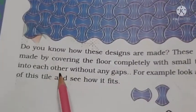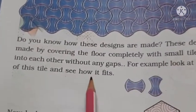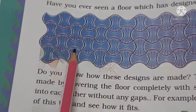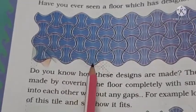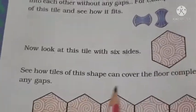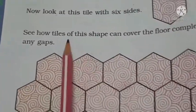The tiles fit into each other without any gaps. For example, look at the shape of this tile and see how it fits — the little tiles are so fit and connect with each other, one in vertical position and one horizontal. Now look at this tile with six sides. This is how tiles of this shape can cover the floor completely without any gap.